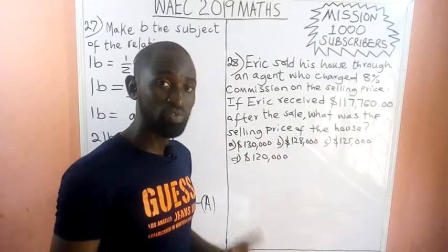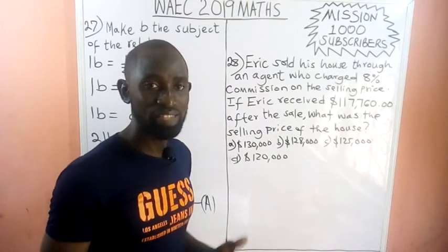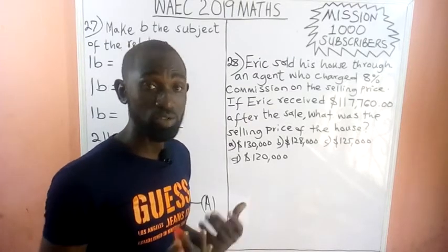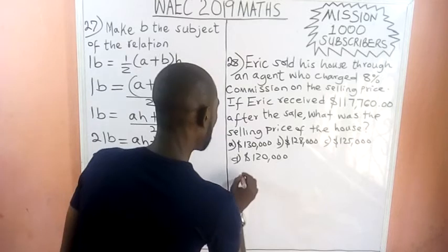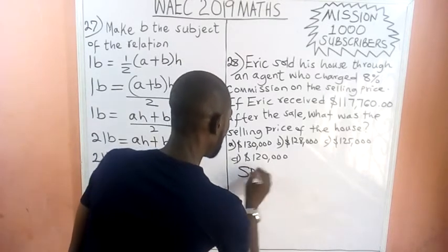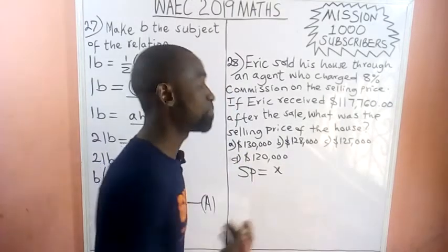If Eric received $1,177.60 after the sale, what was the selling price of the house? We don't know the selling price of the house, so we let the selling price be x.